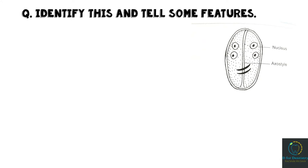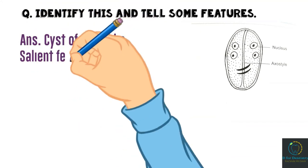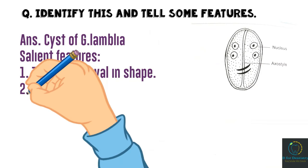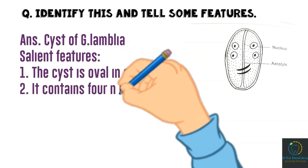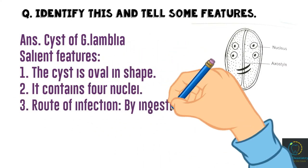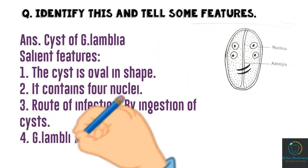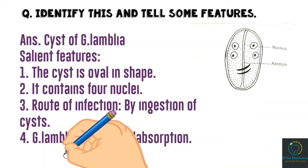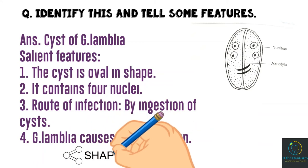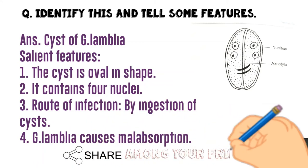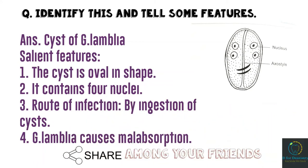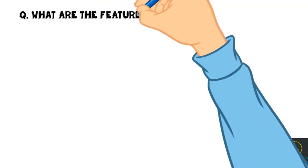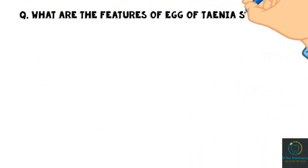Identify this and tell some features. Salient features: The cyst is oval in shape and contains four nuclei. Route of infection is by ingestion of cysts. Giardia lamblia causes malabsorption.